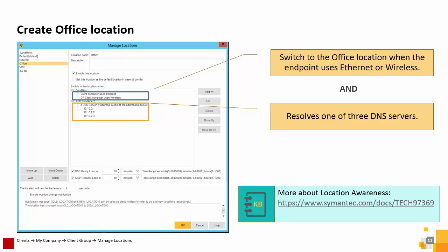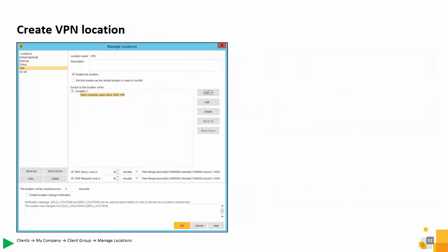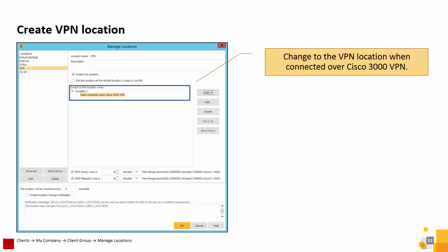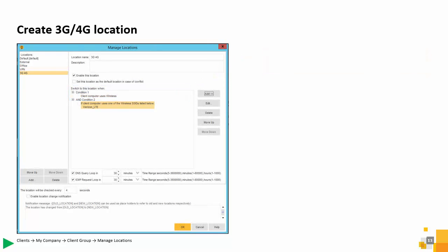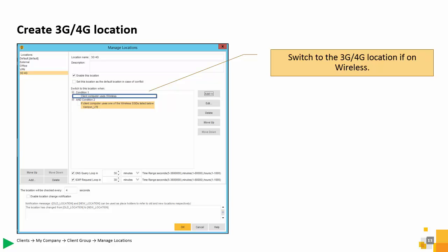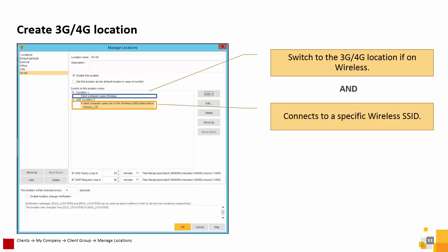If the endpoint is connected over Cisco 3000 VPN, the client changes to the VPN location. The 3G/4G location uses two conditions. Condition 1 checks to see if the endpoint is using a wireless connection. If true, it moves to the second condition. Condition 2 checks to see if the client computer is using a specific wireless SSID.